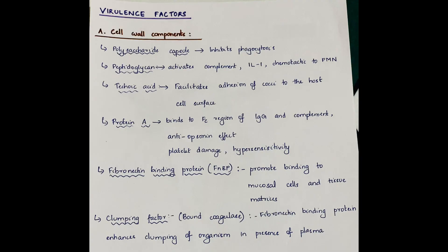Virulence factors of Staphylococcus aureus. Cell wall components include polysaccharide capsules which inhibit phagocytosis. Peptidoglycan activates complement and interleukin-1, chemotactic to polymorphonuclear leukocytes. Teichoic acid is species specific and facilitates adhesion to host cell surfaces. Protein A binds to the Fc region of immunoglobulin G and complement, exerting an anti-opsonin effect. It also induces platelet damage and hypersensitivity. Fibronectin binding protein promotes binding to mucosal cells and tissue matrices. Clumping factor, bound coagulase, and fibronectin binding protein enhance clumping in presence of plasma.